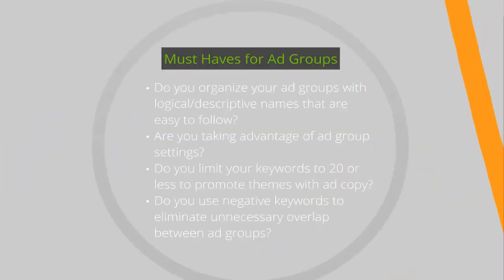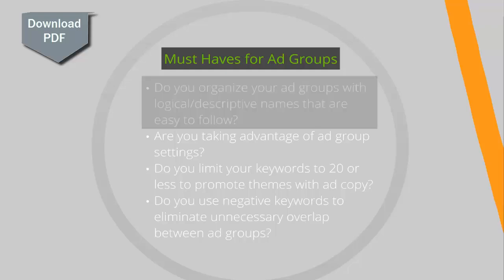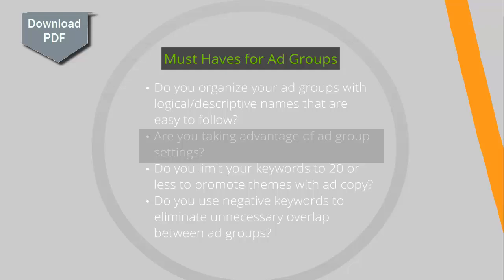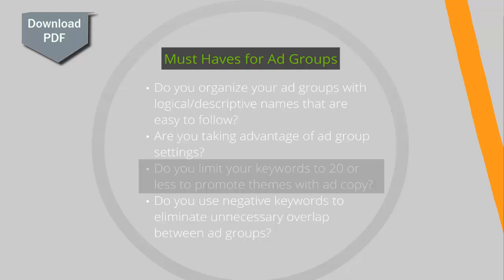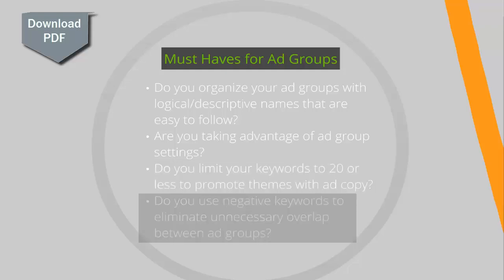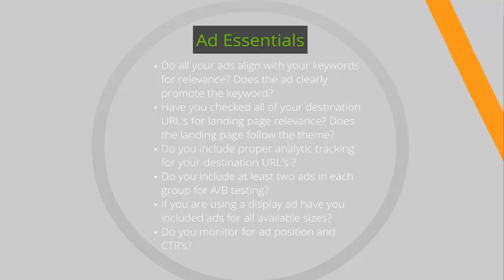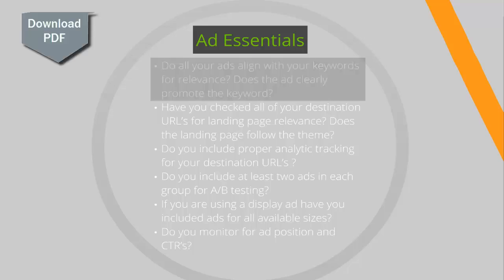Must-haves for ad groups. Ad groups give you an opportunity to refine your list even further. Do you organize your ad groups with logical and descriptive names that are easy to follow? Are you taking advantage of ad group settings? Just as in your main campaign, you can use ad group settings to refine your targets. Do you limit your keywords to 20 or less to promote themes with ad copy? Do you use negative keywords at the ad group level to eliminate unnecessary overlap between ad groups? Do your ads align with your keywords for relevance, and does the ad clearly promote the keyword?